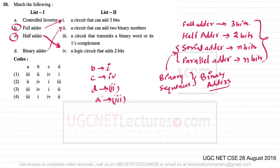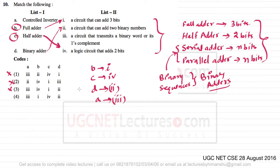In this kind of question, it is not necessary to know the exact matching of all four options. Even if you can get three correct, you can easily predict the fourth one. For option A we have III, and options I and III are directly wrong for B, so the only remaining option is IV.